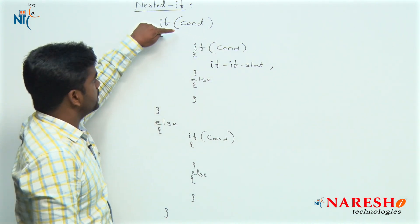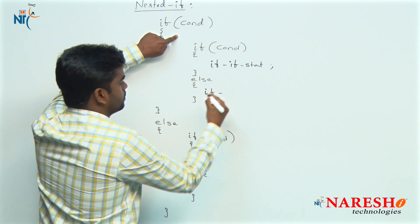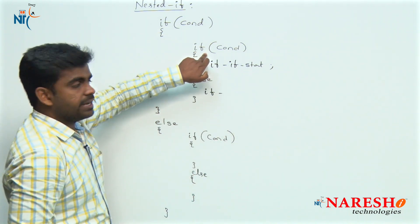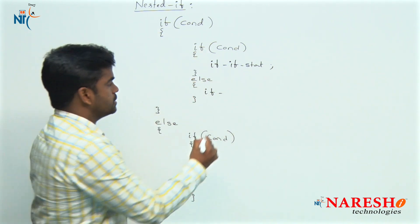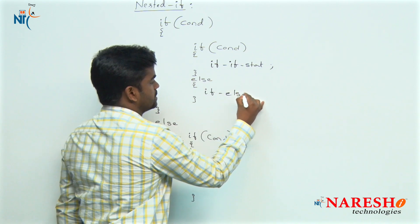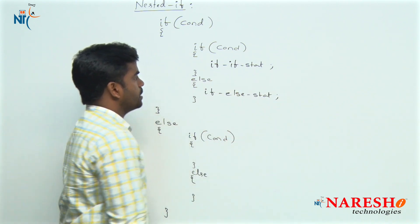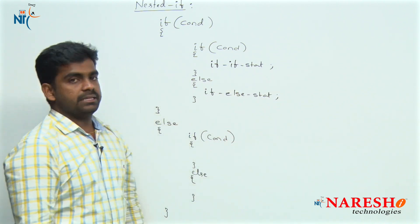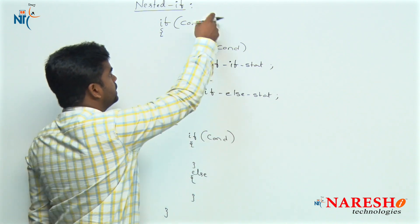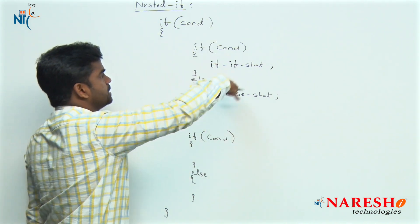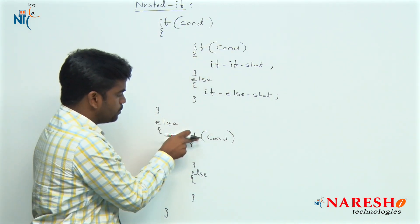But if outer condition is true and inner condition has failed, then as outer condition is true the outer if block statements are entered, but since inner if block failed, the inner else block statements execute. If the outer condition has completely failed, control goes directly to the outer else block.